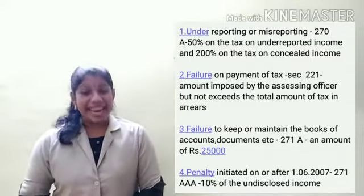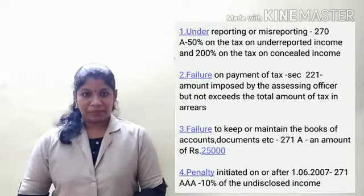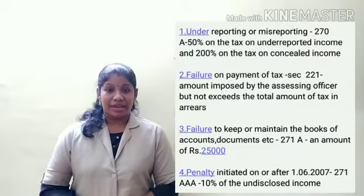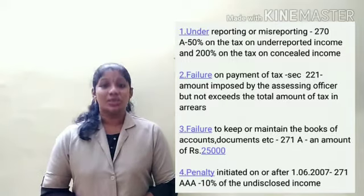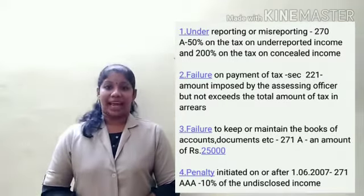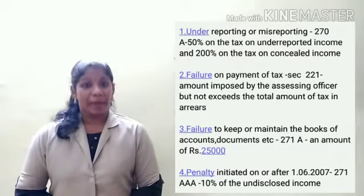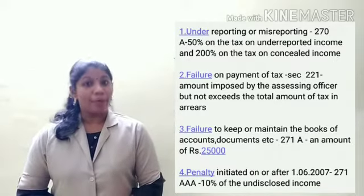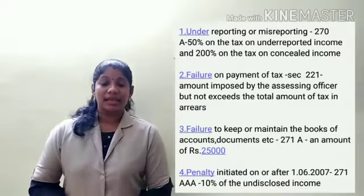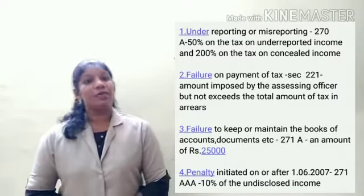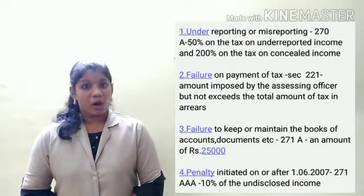The second situation is Failure to Pay Tax, covered under Section 221. If the assessee failed to pay tax or any sum of money to the Income Tax Authority — that is, any sum due under self-assessment — then a penalty is imposed.